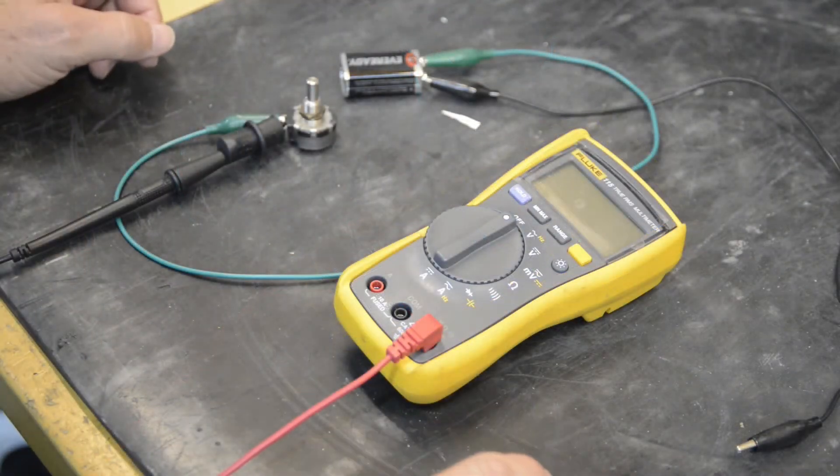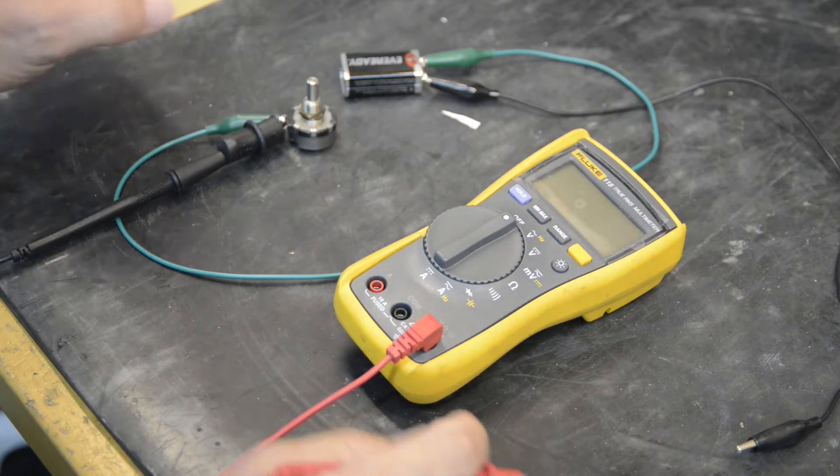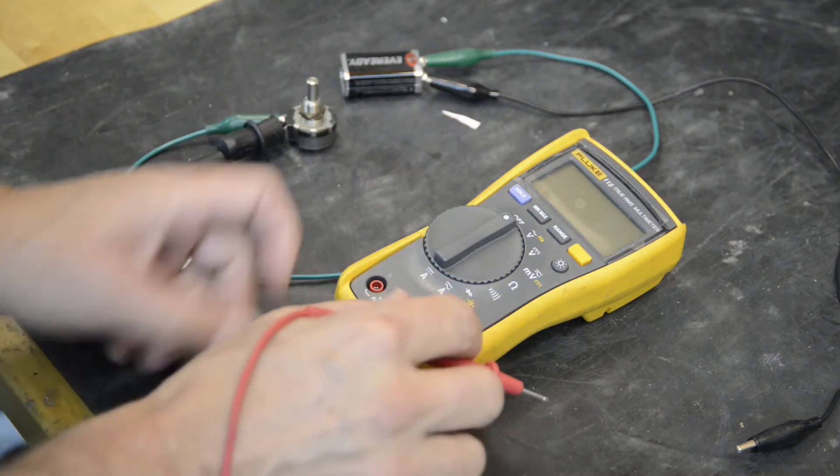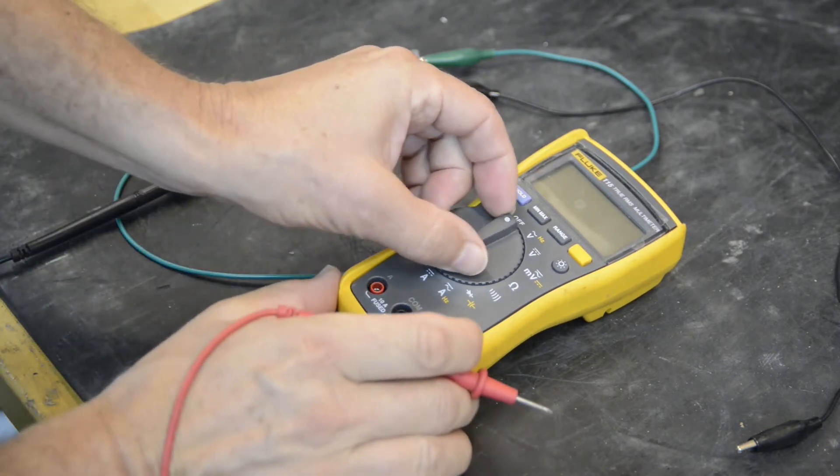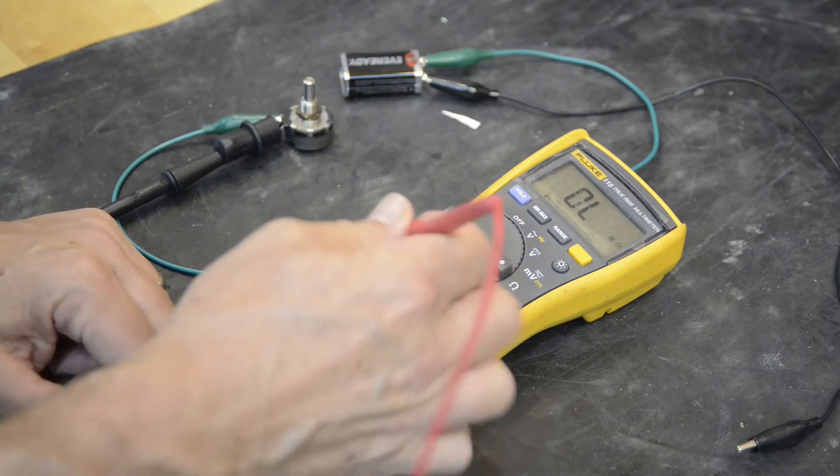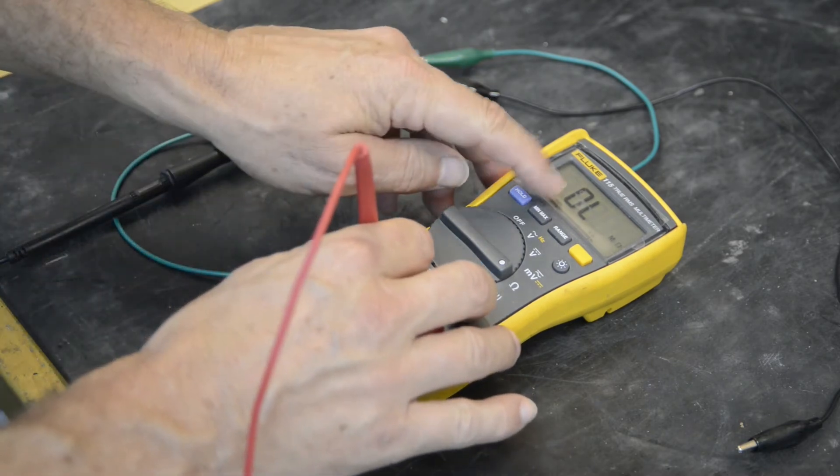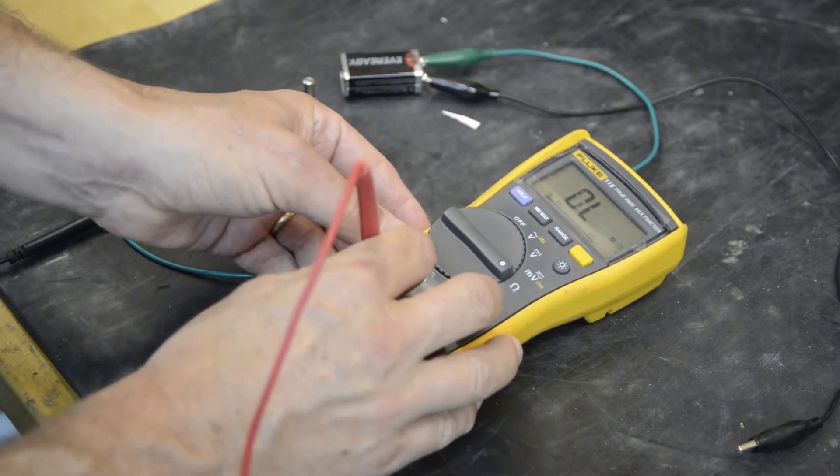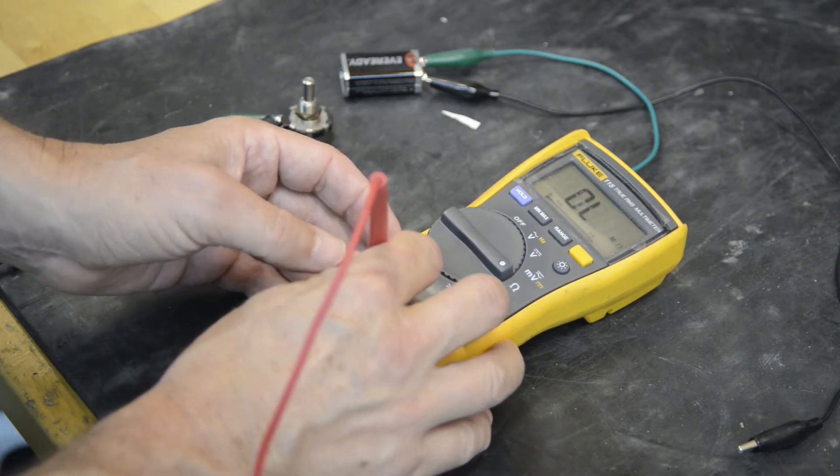A quick way to test the meter to see if the fuse on the inside is good is to have your lead hooked up to the volt ohms and go to ohms, and then put the probe in the amp section and read. It should read zero ohms if there was continuity, if the fuse is good. So we'll take it apart, replace the fuse, and see what happens.